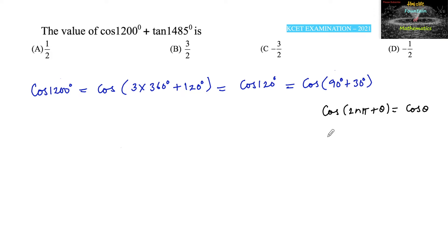And since we know that cos pi by 2 plus theta, or 90 degrees plus theta, is equal to minus sin theta, which is in the second quadrant, so we can write minus sin 30 degrees. Therefore, we can write cos 1200 degrees is equal to, sin 30 is 1 by 2, so minus 1 by 2.